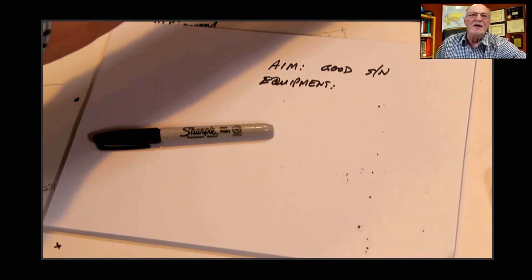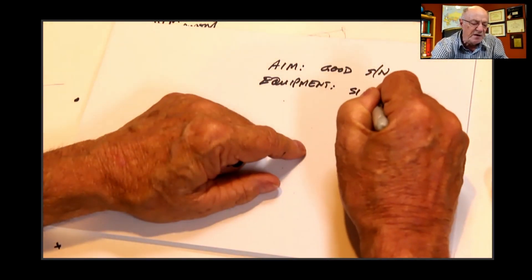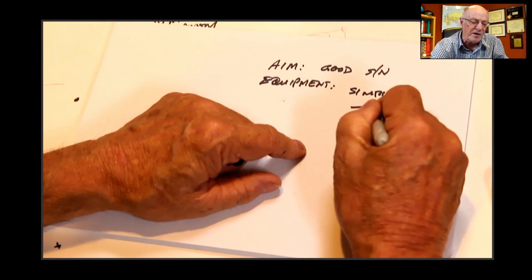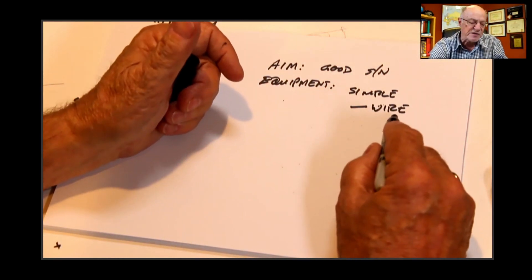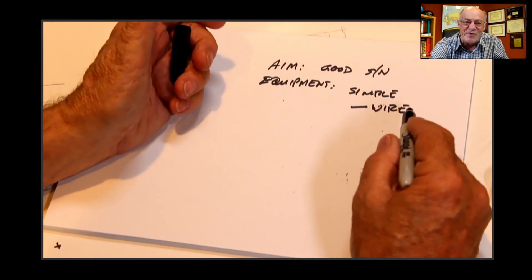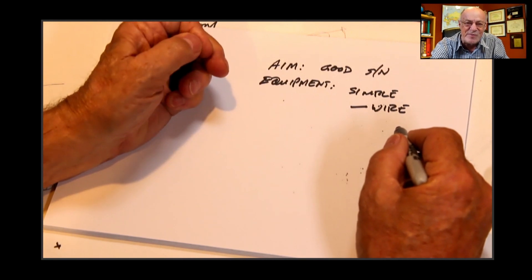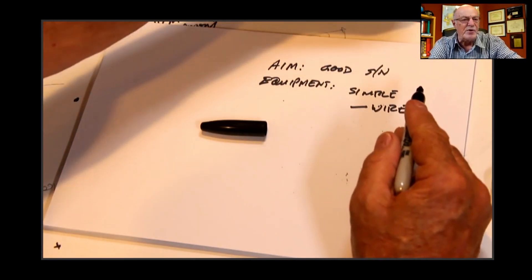In true scientific fashion, we're going to need some equipment. The equipment needs to be simple — just wire, a few insulators, perhaps a few bits and pieces, but nothing expensive at all. Just simple wire. I think we can all rustle up a bit of wire to conduct our experiment. You need a reasonable amount of wire because what we really want to do is go right around the property, like I have here shown by this blue line.